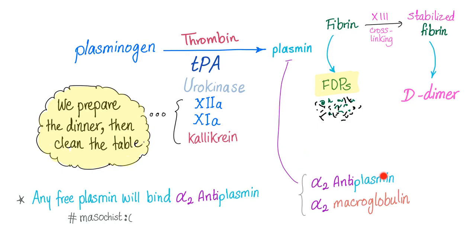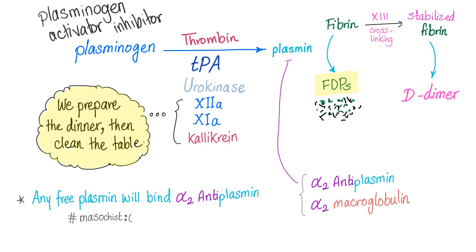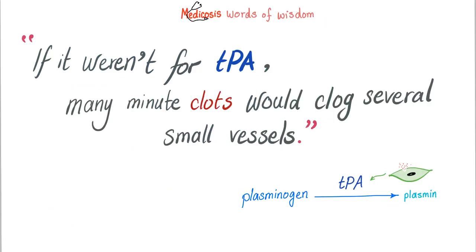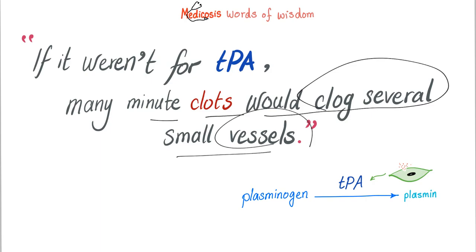Who inhibits plasmin? Alpha-2 antiplasmin and alpha-2 macroglobulin. Who inhibits TPA? Plasminogen activator inhibitor 1 and 2. If it weren't for TPA, many minute clots would clog several small vessels all over your body until you die.